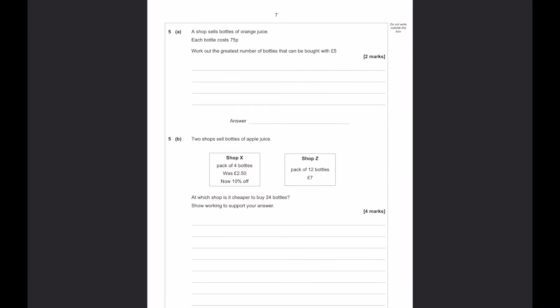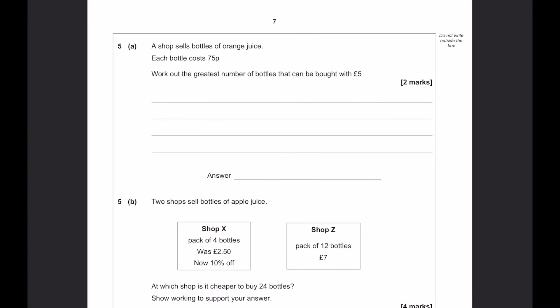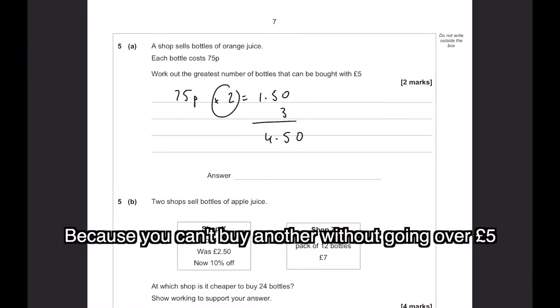A shop sells bottles of orange juice. Each bottle costs 75p. Work out the greatest number of bottles that can be bought with 5 pounds. So, 75p times 2 is £1.50. And if we multiply that by 3, you're going to get £4.50. So, times by 2, times by 3 is going to be 6 in total.